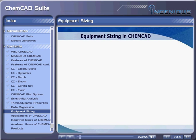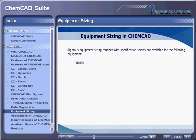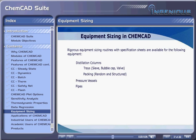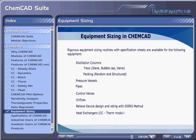Equipment Sizing in ChemCAD. Rigorous equipment sizing routines with specification sheets are available for the following equipment: distillation columns with trays (sieve, bubble cap, valve) and with packing (random and structured), pressure vessels, pipes, control valves, orifices, relief device design and rating with Dyer's method, and heat exchangers using the CC Therm module.